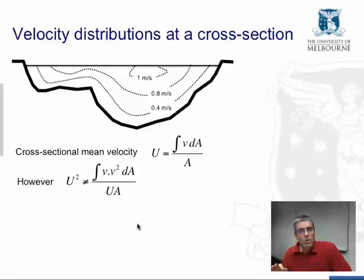However, we've been using u squared to represent the kinetic energy to calculate the kinetic energy of the cross section, but in fact, when you integrate the flow weighted velocity squared over the cross section and calculate the mean value, it doesn't equal the mean velocity squared. So we can't use velocity squared, or if we do use velocity squared, it's not an accurate representation for calculating the kinetic energy of the cross section.